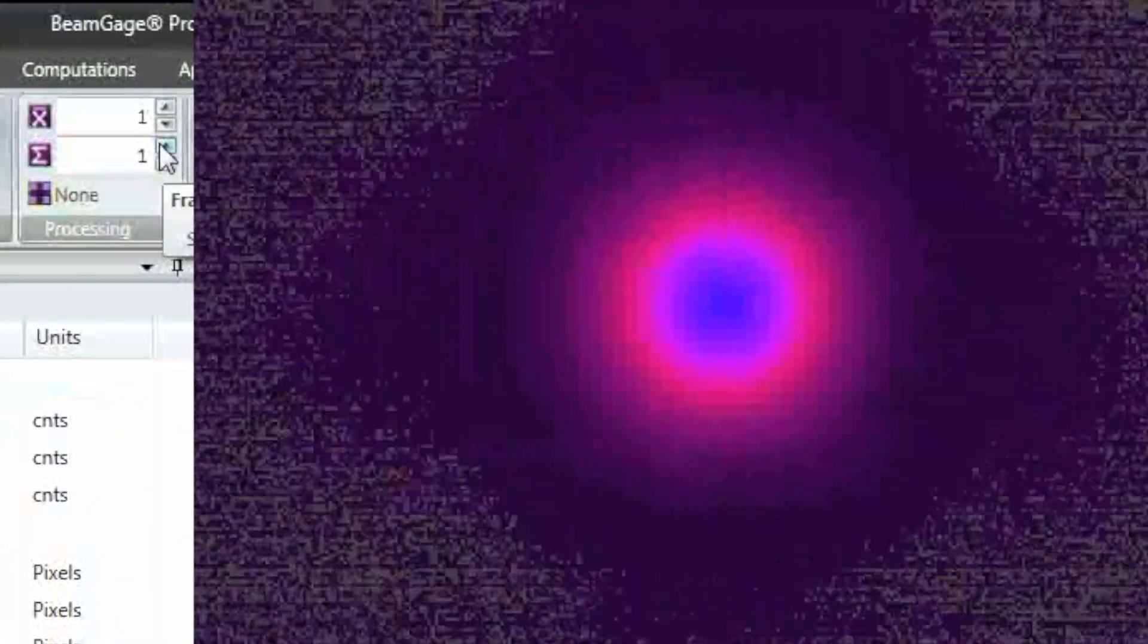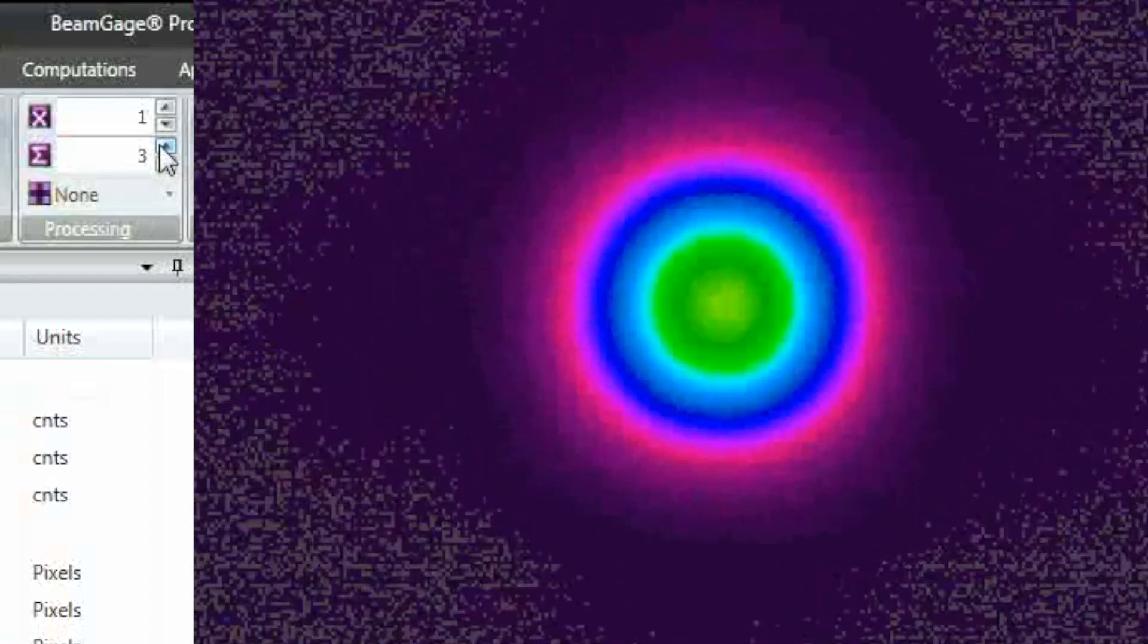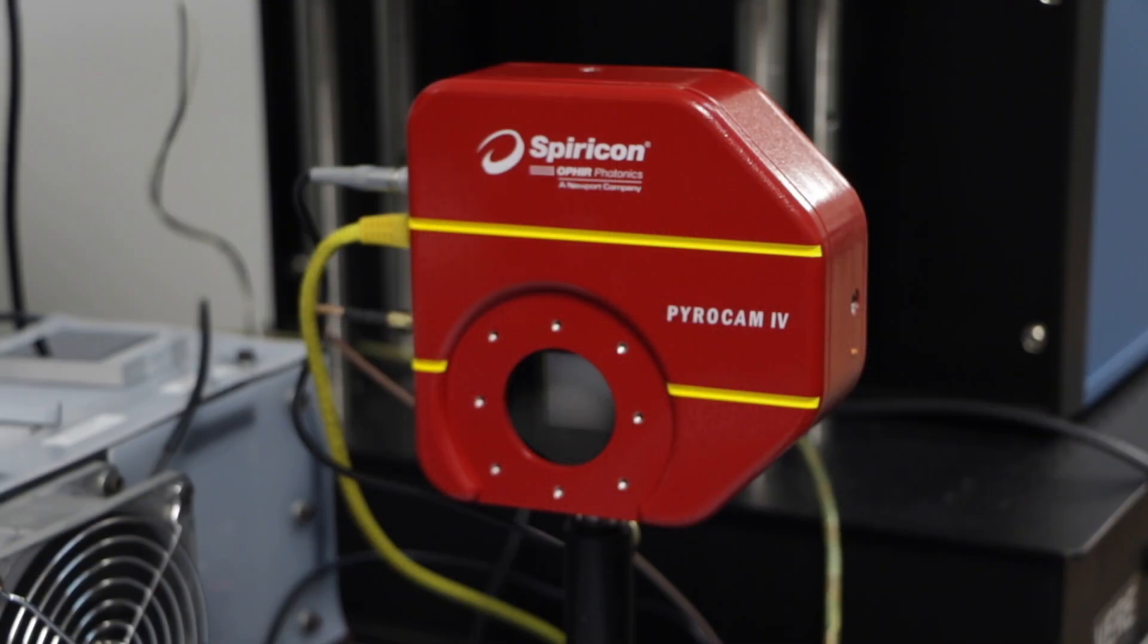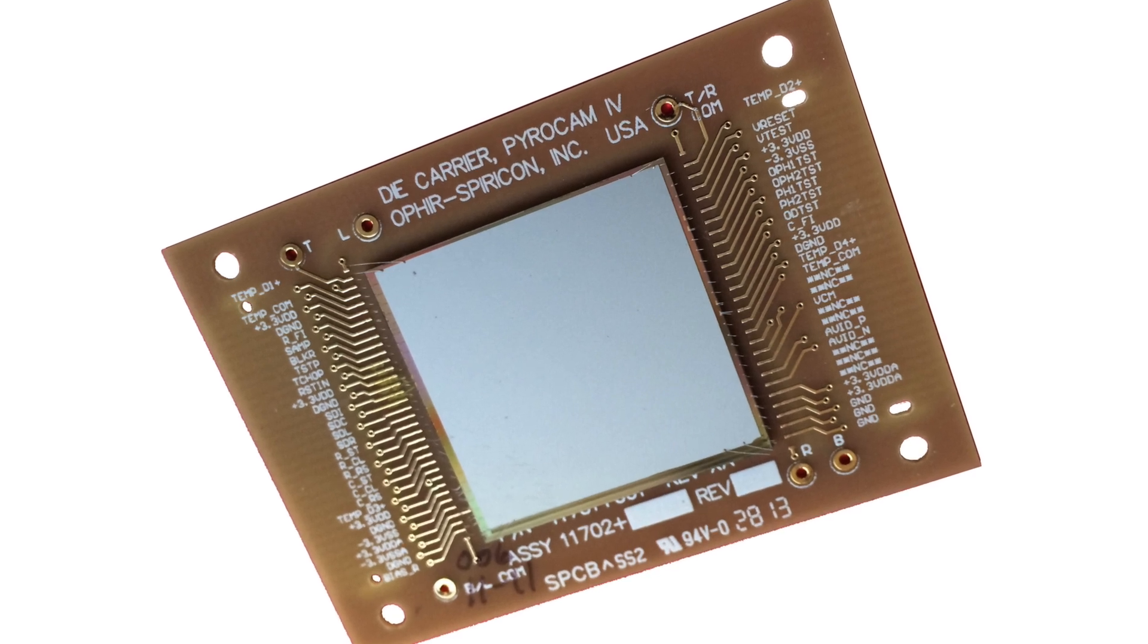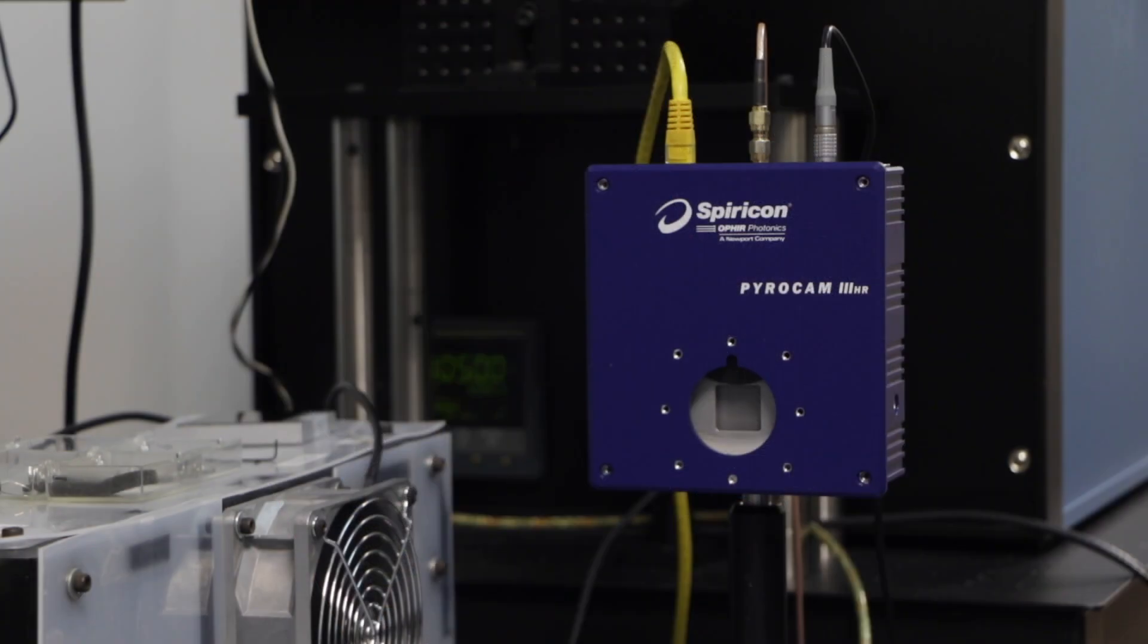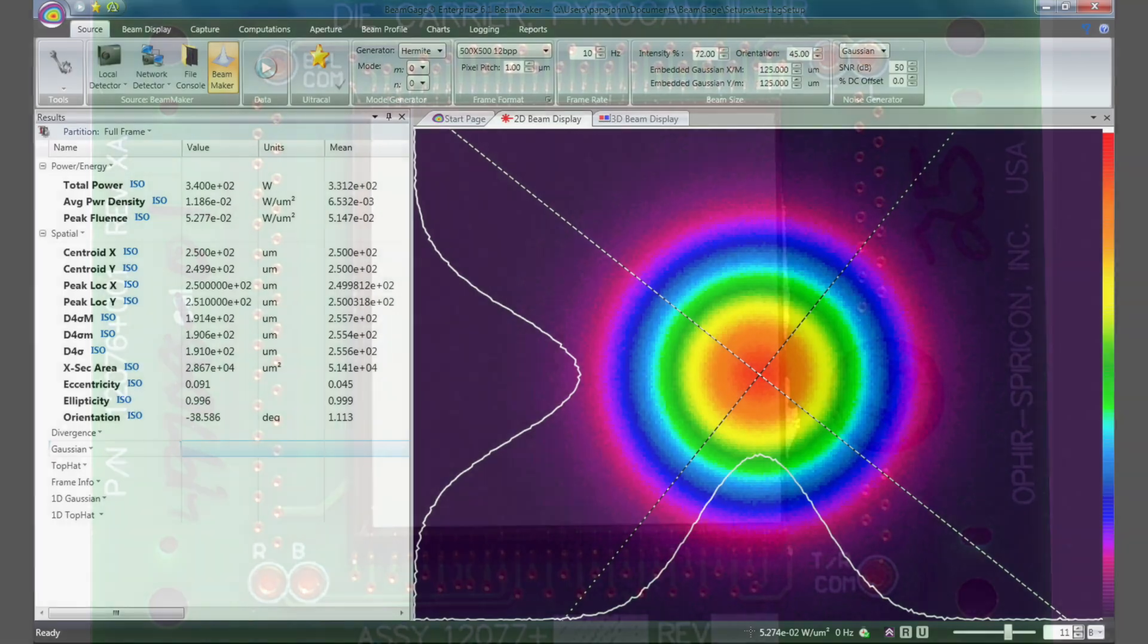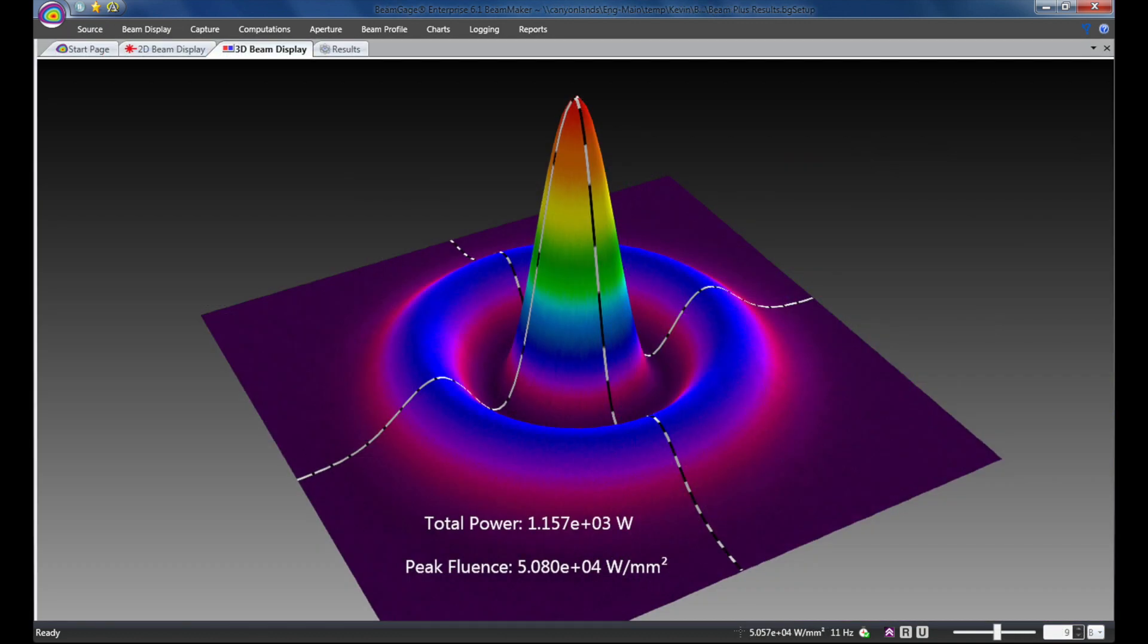The PyroCam 4 offers a 25.6 mm x 25.6 mm detector array and the PyroCam 3HR offers a 12.8 mm x 12.8 mm detector array with easy camera setup and quantitative image display through beam gauge software.